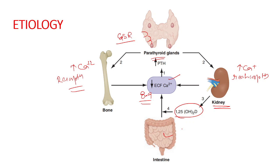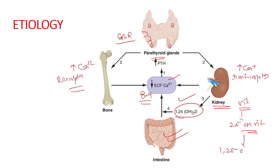PTH also stimulates formation of 1,25-dihydroxy vitamin D from the kidney, which increases intestinal calcium absorption. Collectively, these homeostatic mechanisms restore serum calcium levels to normal. Vitamin D is first converted to 25-hydroxy vitamin D in the liver and finally converted to the active form, 1,25-dihydroxy vitamin D, in the kidney.